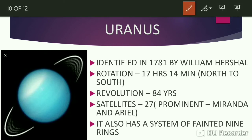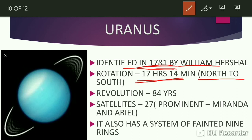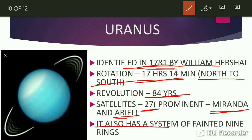Next planet is Uranus. It was identified in the year 1781 by William Herschel. Rotation time taken by Uranus is 17 hours and 14 minutes. It rotates from north to south. Revolution time of Uranus is 84 years. Total number of satellites of Uranus are 27. Prominent satellites are Miranda and Ariel. It also has a system of nine rings, similar to that of Saturn.